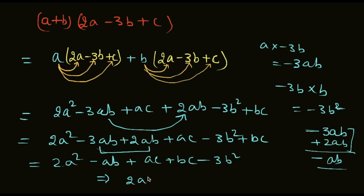The final answer is 2a squared minus 3b squared minus ab plus bc plus ac.